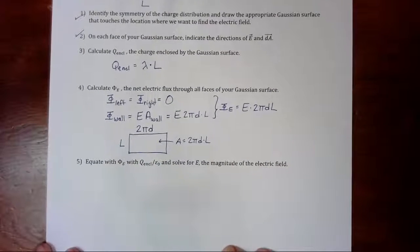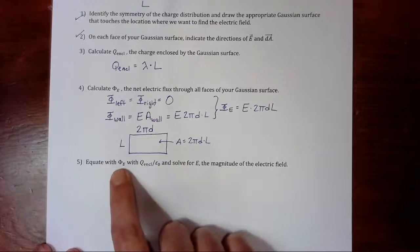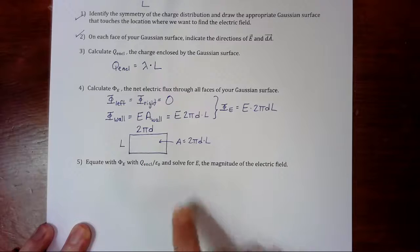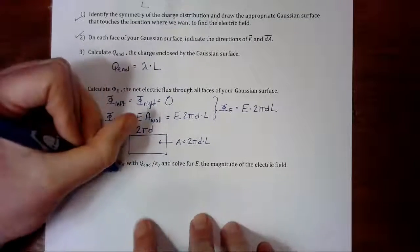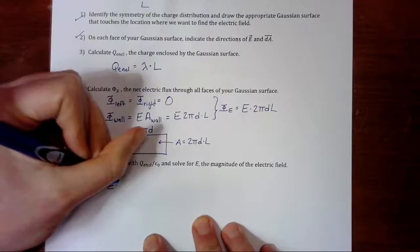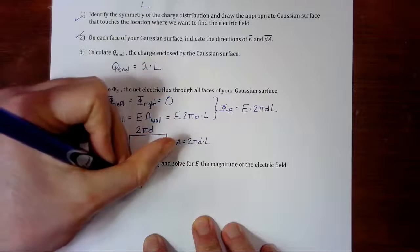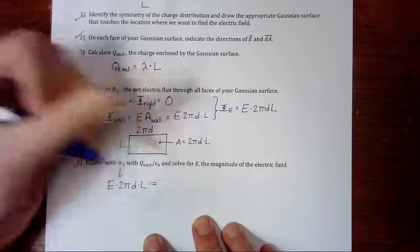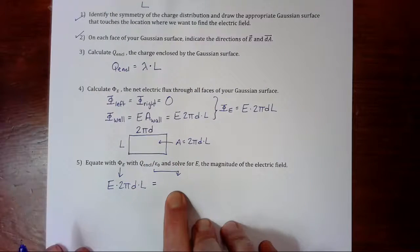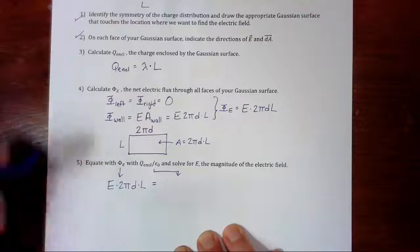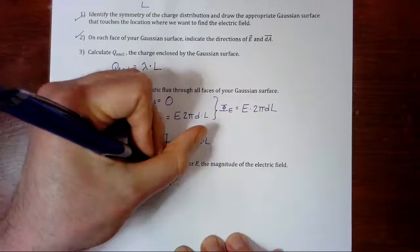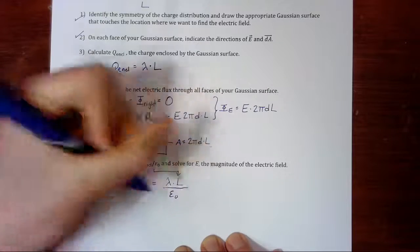Last step. Equate the flux with the enclosed charge over epsilon naught and solve for E. So our electric flux, we said from before, is E times 2πD times L, and then we are going to equate that with Q enclosed over epsilon zero. And Q enclosed, we figured out previously, was lambda times L, so that's going to be lambda times L divided by epsilon zero.